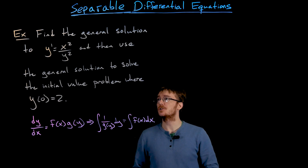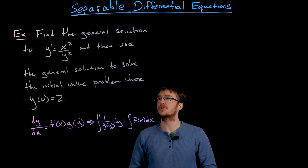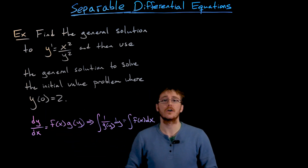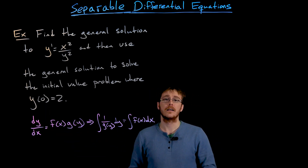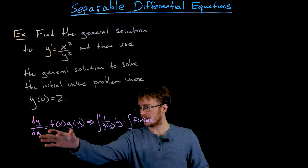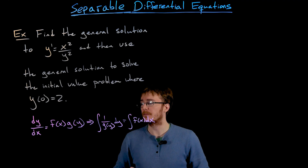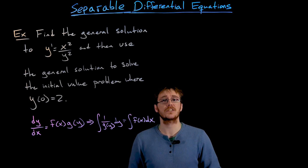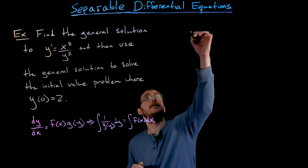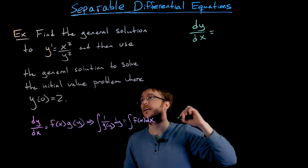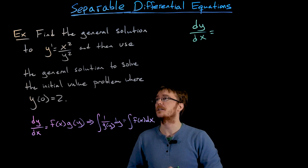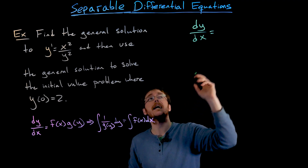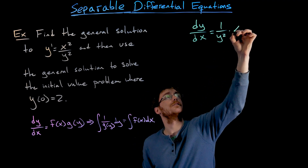In this example we want to find the general solution to the first-order differential equation y prime equals x squared over y squared. Once we have the general solution, we want to use it to solve the initial value problem where y(0) equals 2. We'll use separation of variables. Switching to Leibniz notation — which I always recommend for this approach — we write dy/dx equals one over y squared times x squared.